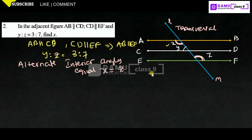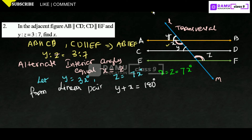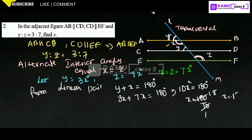Since y:z = 3:7, let y = 3x degrees and z = 7x degrees. Since x equals z, we have x = 7x degrees. Using the linear pair condition, y plus x equals 180 degrees, so 3x plus 7x equals 180 degrees, giving 10x = 180, and therefore x = 18 degrees.